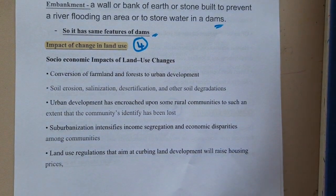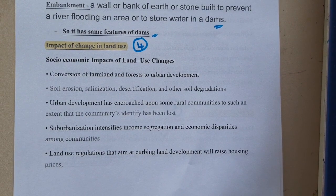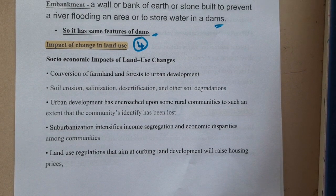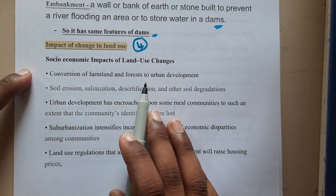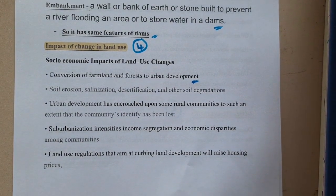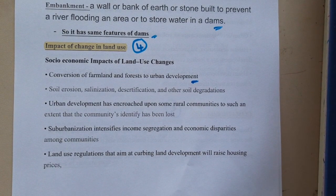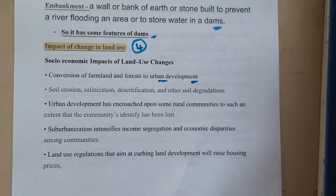So the impacts on land usage — the people who are shifted from one place to another place will be having multiple issues. Conversion of farmer lands and forests to urban development is a key concern. Basically, whatever land you are staying on today could have been a forest previously. Forests and farmer lands are slowly converting into urban areas.